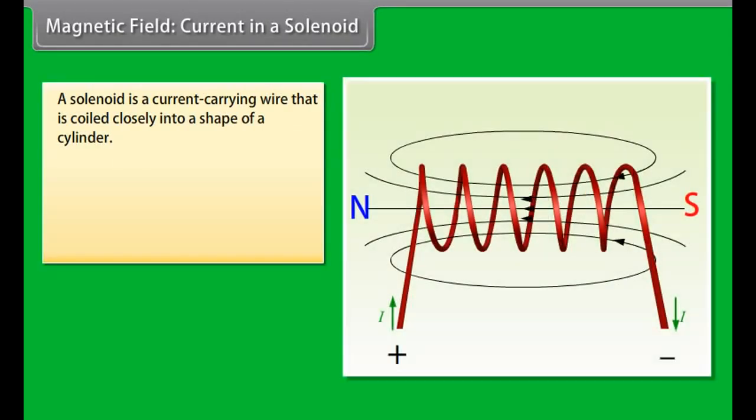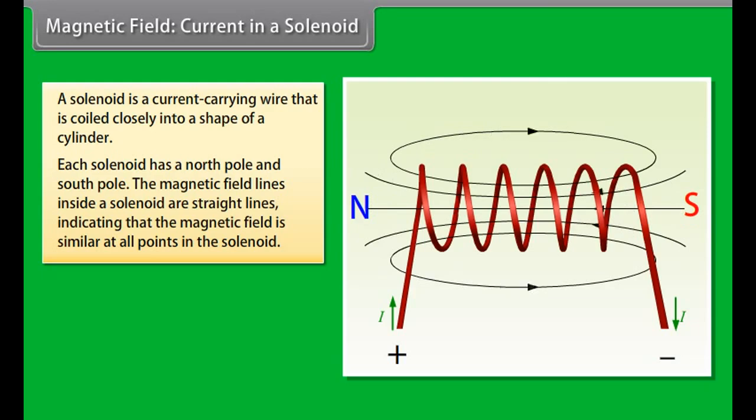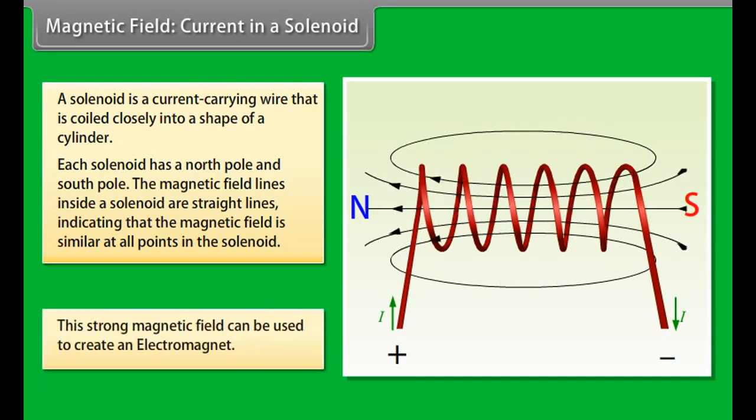Magnetic Field Current in a Solenoid. A solenoid is a current carrying wire that is coiled closely into a shape of a cylinder with the turns as close together as possible. This is similar to a bar magnet. Each solenoid has a north pole and south pole. The magnetic field lines inside a solenoid are straight lines and indicate that the magnetic field is similar at all points in the solenoid. This strong magnetic field in the solenoid can be used to magnetize magnetic materials. This type of a magnet is called an electromagnet.